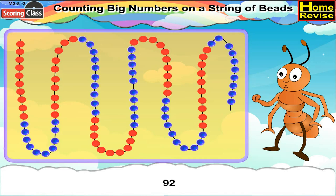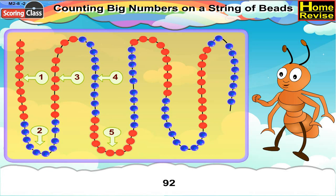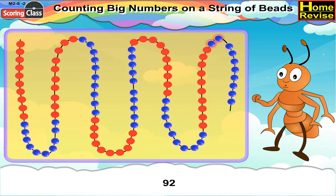Number 92. For number 92, first we'll count 10 red beads, followed by 10 blue beads, then followed by 10 red beads, further 10 blue beads, further followed by 10 red beads, further 10 blue beads, again followed by 10 red beads, again further followed by 10 blue beads, then again we have 10 red beads. Now, add 2 blue beads to it. Place the clip after 2 blue beads and this is your number 92.